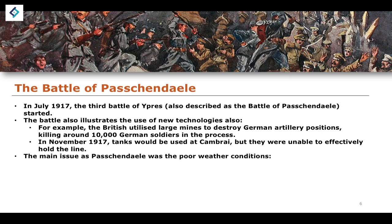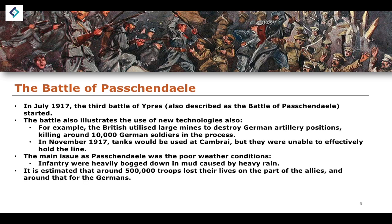The main issue at the Battle of Passchendaele was poor weather conditions. Infantry were heavily bogged down by mud caused by heavy rain. It is estimated that around half a million troops would lose their lives on the part of the Allies, and around the same on the part of the German forces — so around another million soldiers died as a result of the Battle of Passchendaele, again illustrative of the huge loss of life characteristic of the entire First World War. This lesson has looked at three major battles: Verdun, the Somme, and Passchendaele. In the next lesson, we will look at the Gallipoli Offensive and its implications.